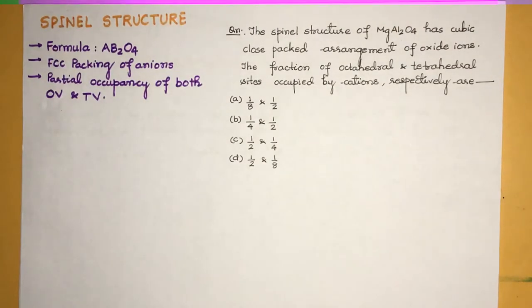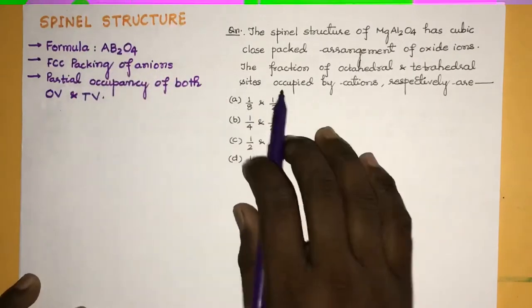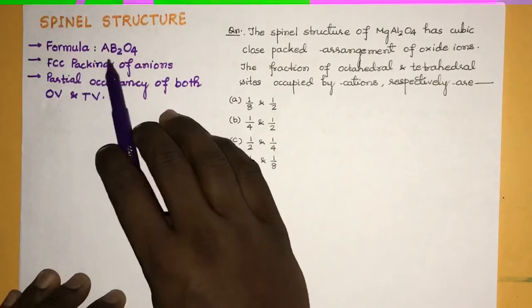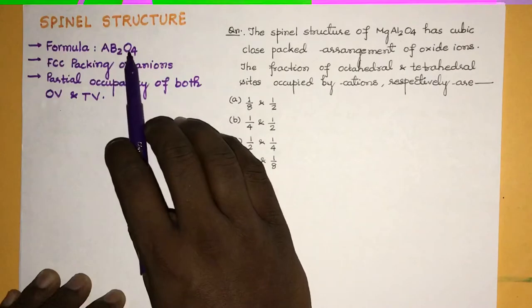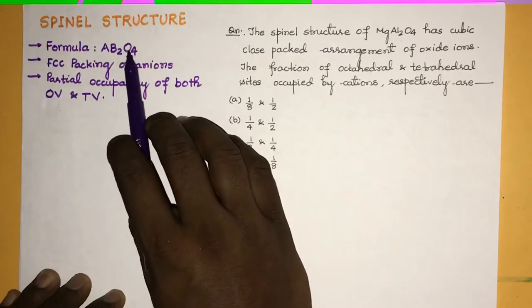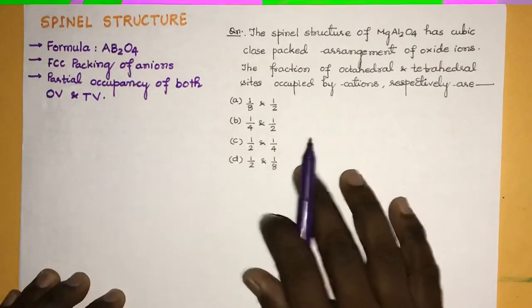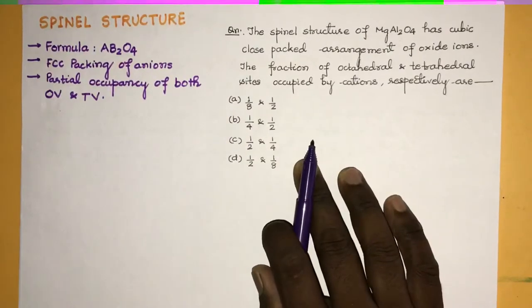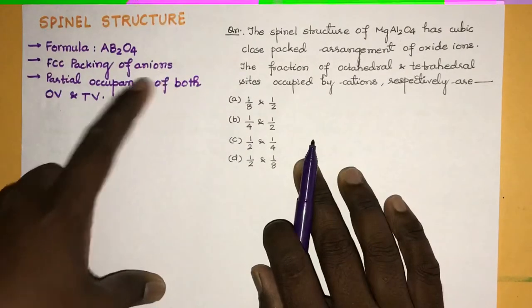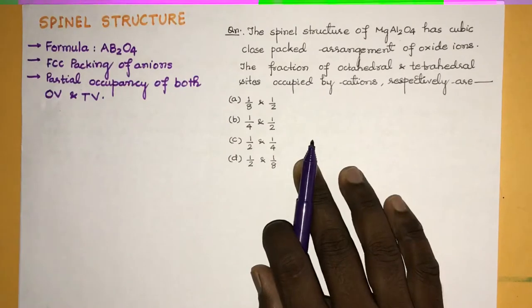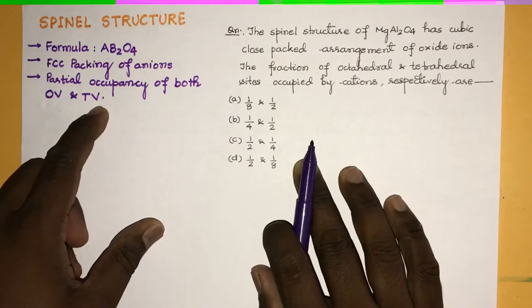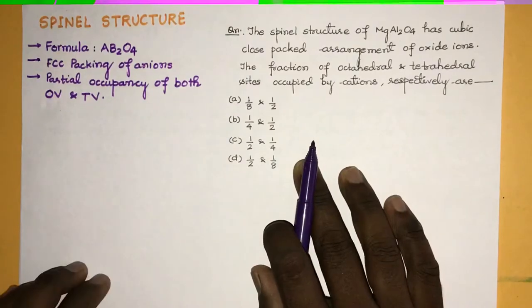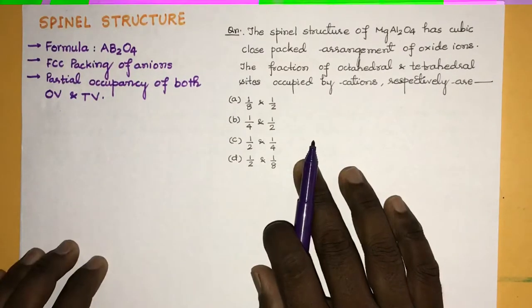Hello everyone, good morning. Today I am going to discuss a spinel structure in brief. The formula is AB2O4 where A and B are cations and O is the oxide ion. In this type of structure, the anions form the FCC lattice whereas the octahedral voids and tetrahedral voids are partially filled by the A and B cations.